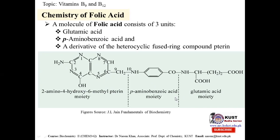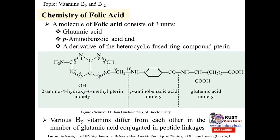Vitamin B9 forms differ from each other in the number of glutamic acid units conjugated via peptide linkage. There are different forms of folic acid — some have one, some have five, or some have six glutamic acid units. This acid group can be linked via peptide bonds to additional glutamic acid residues, giving different polyglutamate forms.